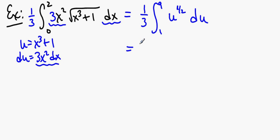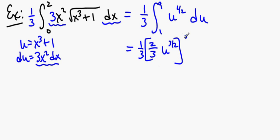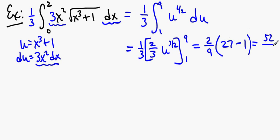So how does this go? I've got 1/3, and I'm going to find an anti-derivative. That anti-derivative is 2/3 · u^(3/2). Remember, the power goes up by 1 and we divide by that power. I'm going to sub in 9, sub in 1, and subtract. So 1/3 times 2/3 is 2/9. And then I've got 9^(3/2) — that's the square root cubed — minus 1^(3/2). Done.